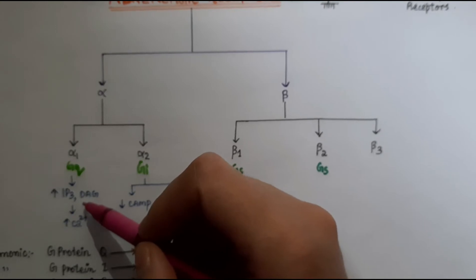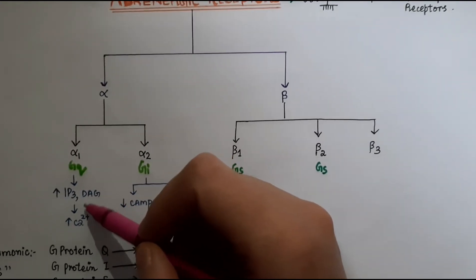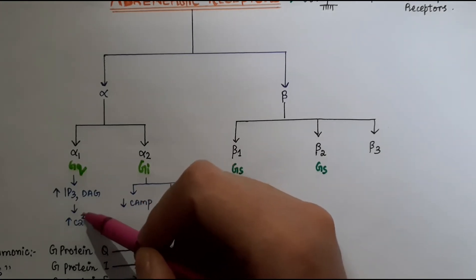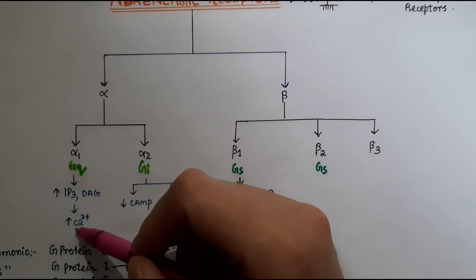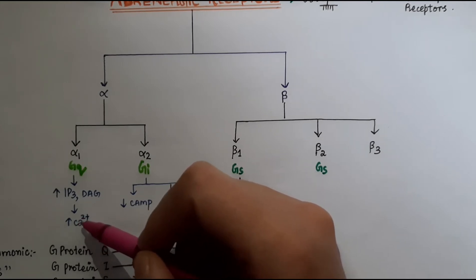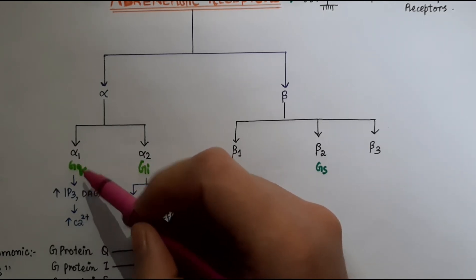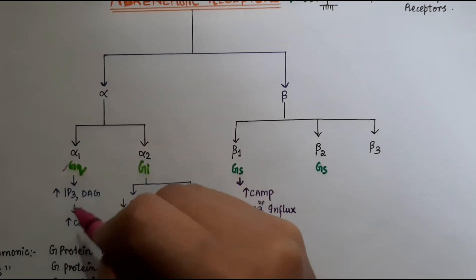If you want a detailed video, I'll provide a link in the description. The mechanism involves IP3 and DAG, which increases intracellular calcium through calcium channels. The alpha-1 receptor is linked to the Gq form of G-protein.